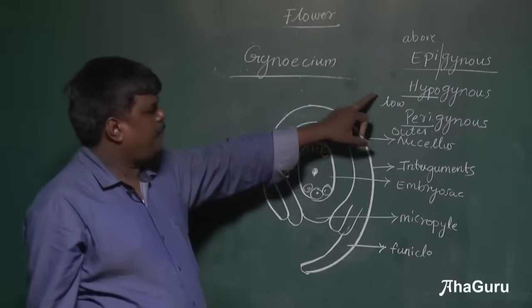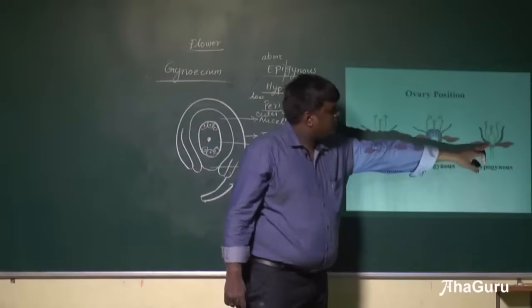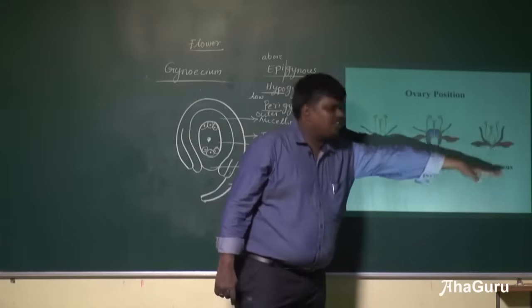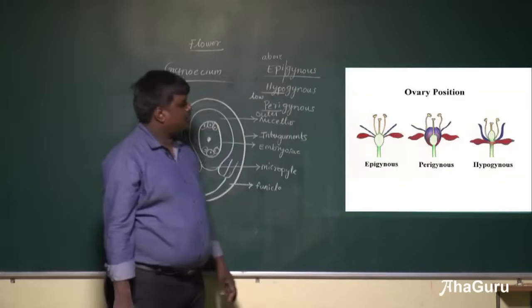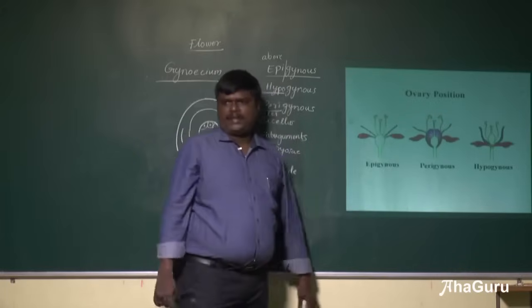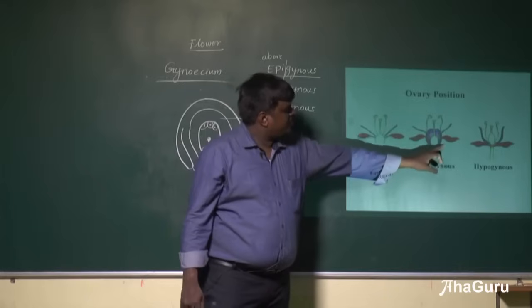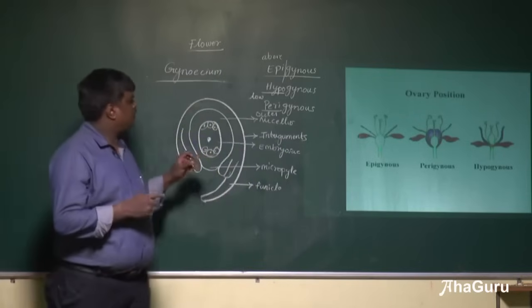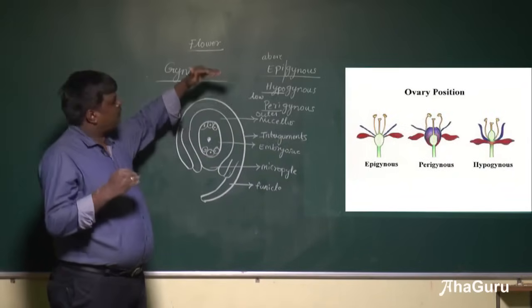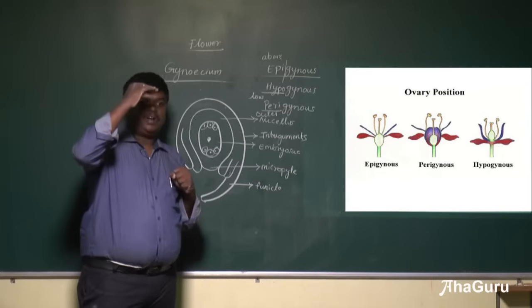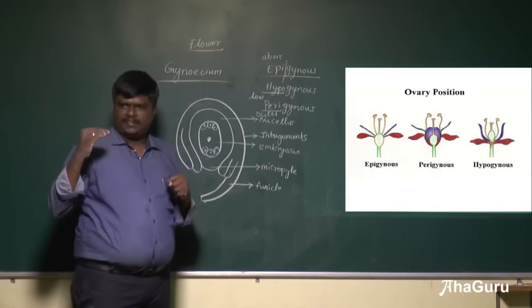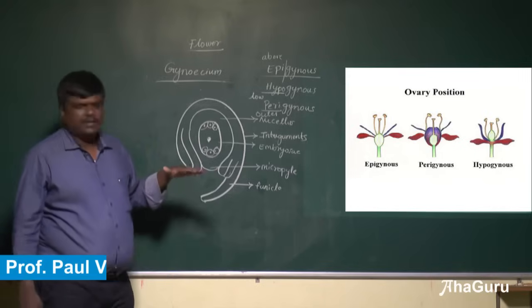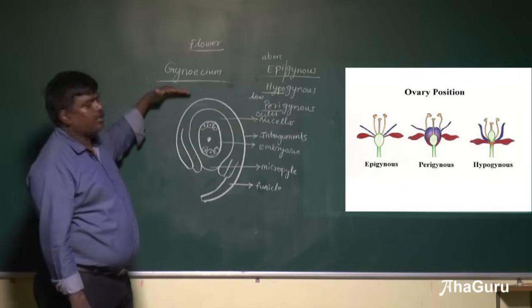In a hypogynous flower, the ovary is on top while the rest of the parts are below it. In a perigynous flower, all the flower parts are on the outer side of the gynoecium or ovary. So, epigynous means calyx, corolla, and androecium are above the ovary; hypogynous means they are below the ovary; and perigynous means they are towards the outer sides of the ovary.